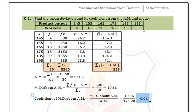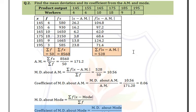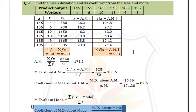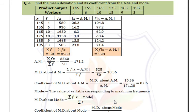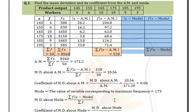Now for mean deviation and its coefficient from mode, we need to find the mode. In frequency distribution, we find the highest frequency, which is 18, and the corresponding x is 175, so mode = 175. Now we calculate |x - mode| and multiply by the corresponding frequency.